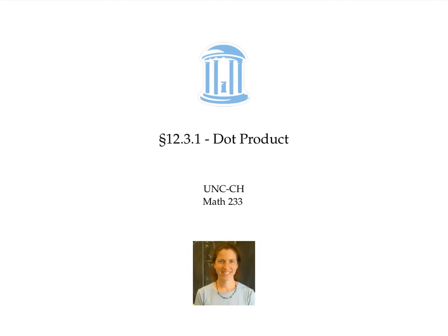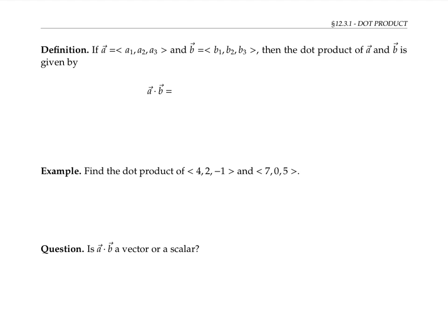This video introduces the dot product of two vectors. Suppose vectors a and b are given in terms of components. The dot product a dot b is given by multiplying together corresponding components and adding them up. That is, a dot b equals a1 times b1 plus a2 times b2 plus a3 times b3.